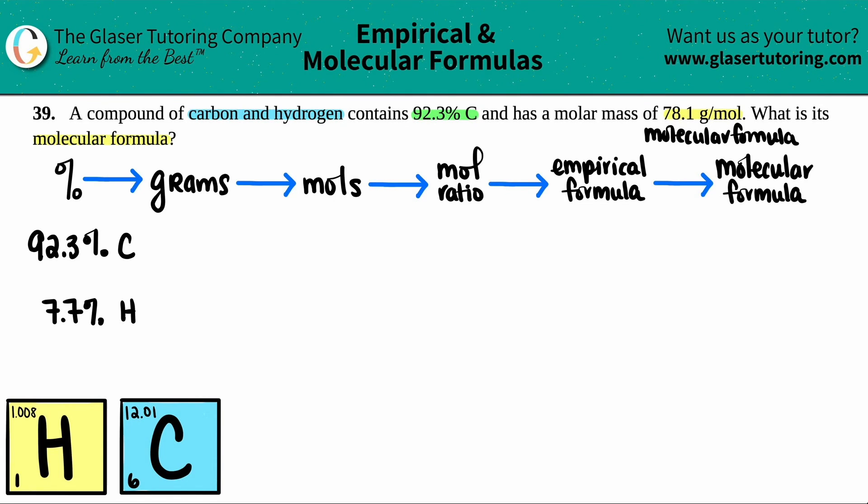And I get 7.7. So that's the first thing. They didn't give you the percentage of hydrogen, but we had to assume that it was 100%. So I do 100 minus 92.3 to get 7.7% hydrogen. Now I'm ready to rock and roll.